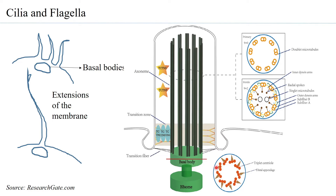In the basal body the nine sets are triplets, but in the cilia and flagella the microtubules are doublets — not triplets. So in the 9 plus 2 arrangement found in cilia and flagella, the microtubule sets are doublets, whereas in the basal body they are triplets. This structural variation occurs as the structure transitions from the basal body to forming the cilia and flagella.